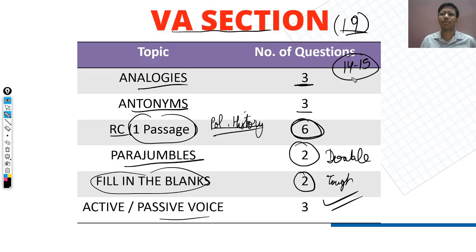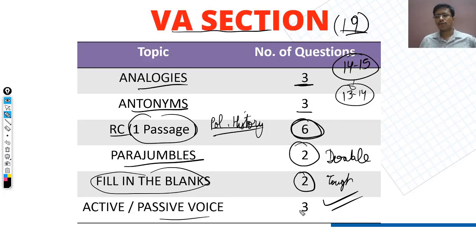Out of the 19 VA questions, I would say 13 to 15 questions were easily doable.